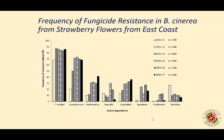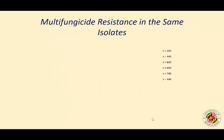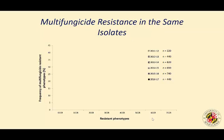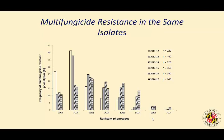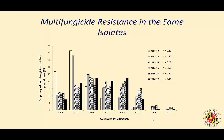In addition to monitoring resistance frequency, we also looked at multi-fungicide resistance in the same isolates. Zero CCR means the isolate is sensitive; 1CCR means resistant to only one chemical class. In the beginning, more isolates were either sensitive or resistant to one chemical class. Over the years, there was a shift toward multi-fungicide resistance, with some isolates even resistant to seven different chemical classes — super-resistant strains.